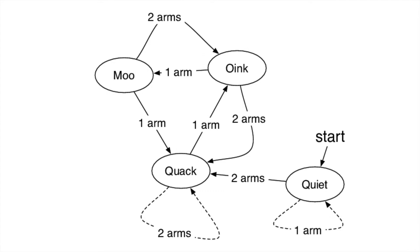So if we were to begin in the quiet setting and I raise two arms up, what sound would you start to make? Quack, quack, quack — that's right. So you received a cue to quack using my two hands, and you're going to stay in that state of quacking until I give you the next transition or cue to determine your next state, your next sound.